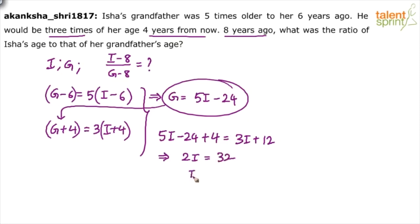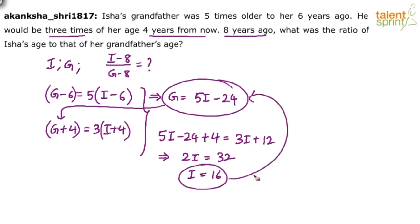I equals 16. Substituting back, G equals five times 16, which is 80, minus 24, giving G equals 56.